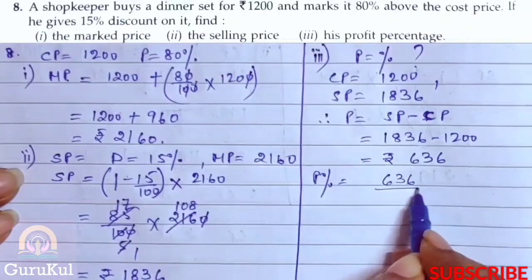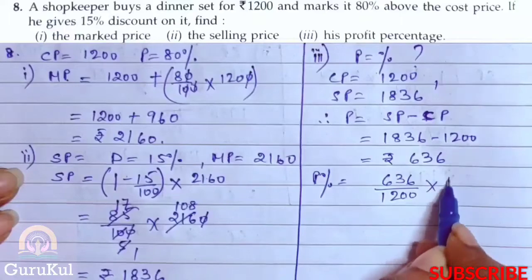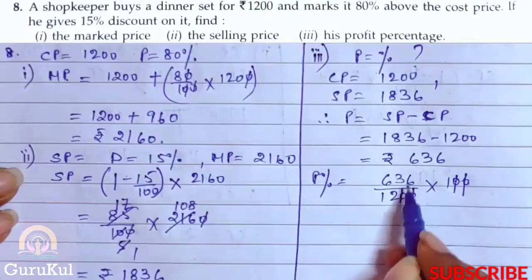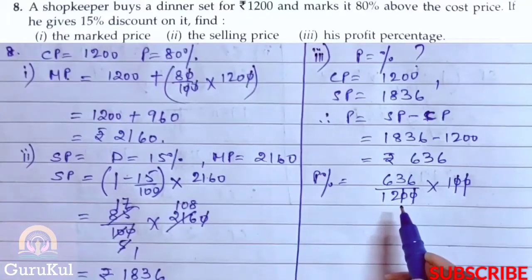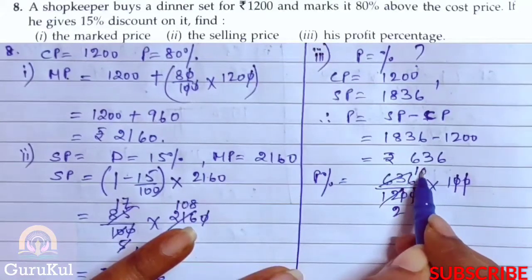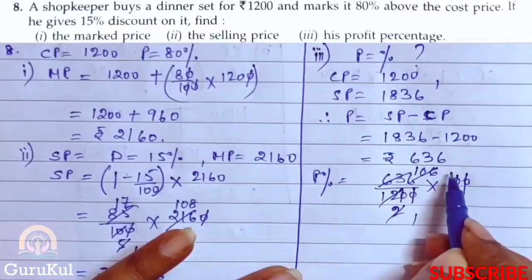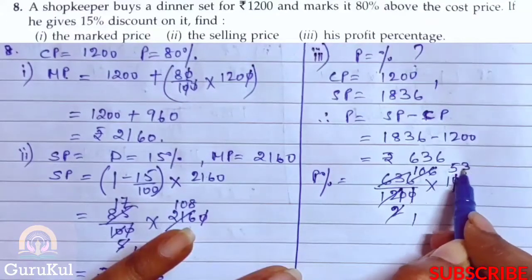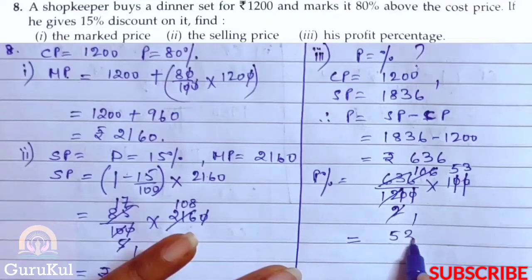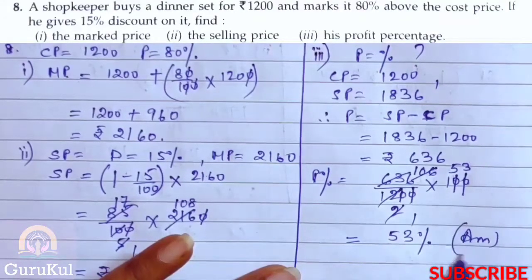Profit percent is 636 divided by cost price 1200, into 100. After reducing, we get 53 percent. So the profit percent that came out is 53%. And this is the answer.